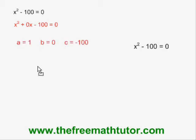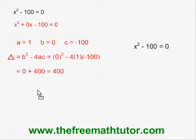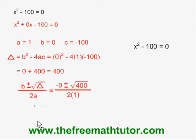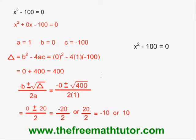I plug them into the formula for the discriminant delta, and I end up getting delta equals 400. Plugging a, b, and delta into the quadratic formula, I end up with two answers: negative 10 or 10. The roots of this quadratic equation are at negative 10 and 10.